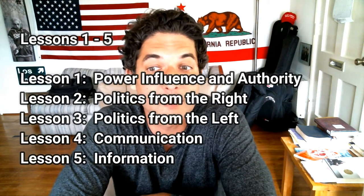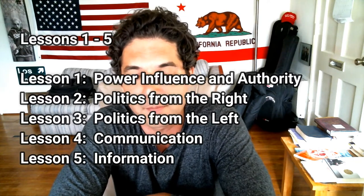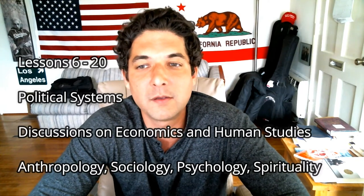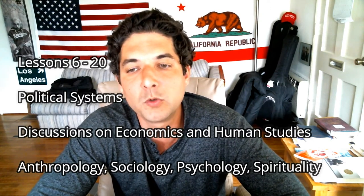After these five videos, pretty much every video we discuss will somehow be applicable back to those first five foundational videos. After videos one through five, we'll get into different political systems — an overview in what we'll call the Political Science 101 video series — covering political systems and their historical applications. These will also include short discussions on economics and other human studies like anthropology, sociology, a little psychology, and of course spirituality, which is very important in the political context. After the 101 level, we'll get into more advanced studies, including modern applications, current events, news, and contemporary history.